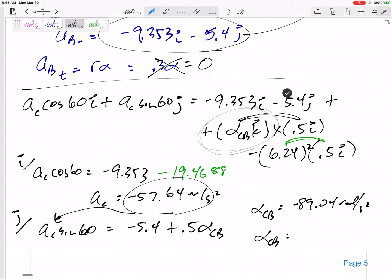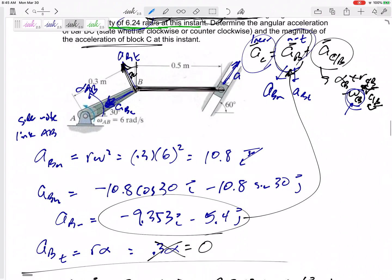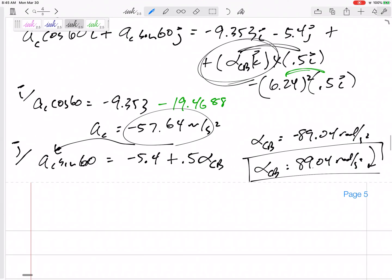What does that negative mean? That negative means I chose incorrectly. And so this acceleration is, I thought it was in the positive K. I thought it was counterclockwise, but it is actually clockwise. 89.04 radians per second clockwise. All right, and the acceleration of C, did it ask for that? Magnitude of the acceleration of block C, 57.64 meters per second squared is the acceleration for block C.